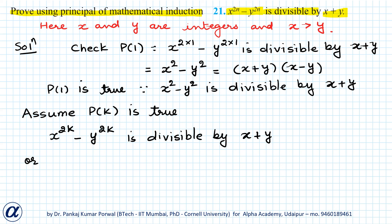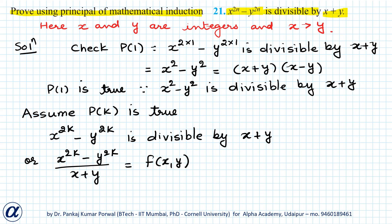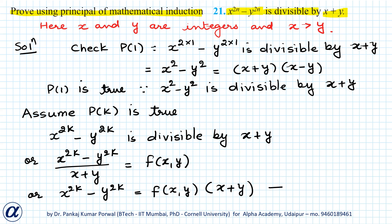This I can write as x to the power 2k minus y to the power 2k divided by x plus y equals some function of x and y. Or equivalently, x to the power 2k minus y to the power 2k equals f(x, y) into x plus y. Let's call this equation (1), which I can treat as given to prove P(k+1).